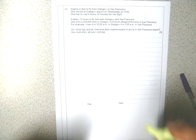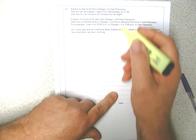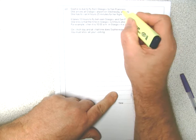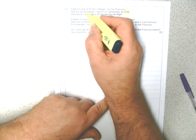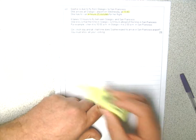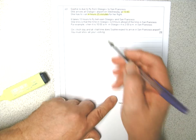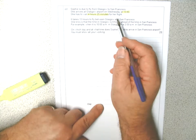Okay, so we've got Sophie flying from Glasgow to San Francisco. She's in the airport at 1340 and she's going to wait four hours and 25 minutes, so I can calculate the time that the plane leaves.